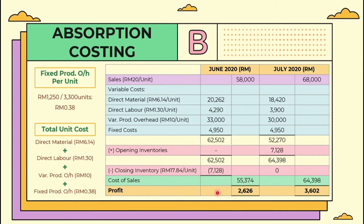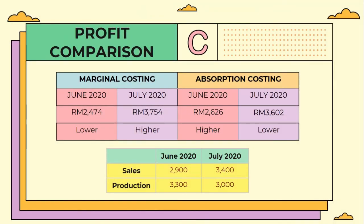We will get a profit of 2,626 ringgit in June 2020 and 3,602 ringgit in July 2020 under absorption costing. This is our profit comparison. For marginal costing technique, the profit in June 2020 is lower than July 2020. But for absorption costing technique, the profit in June 2020 is higher than July 2020.